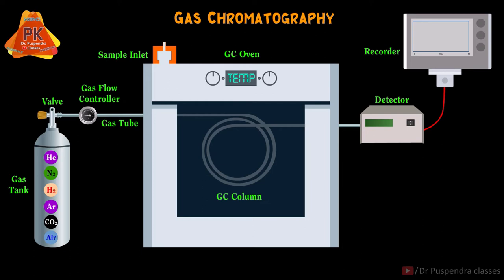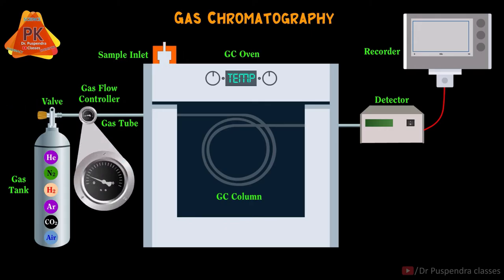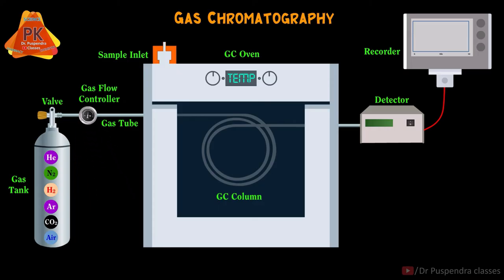Now coming to the working of the GC instrument. First, we will open the gas tank valve, then set the pressure of the gas mobile phase at 40 to 80 psi. Now the gas mobile phase will be flowing in the GC column.